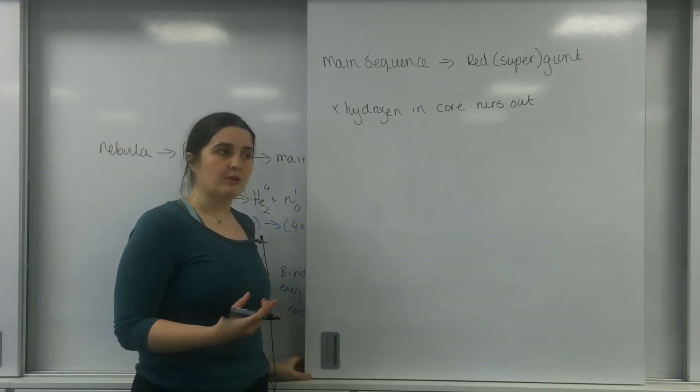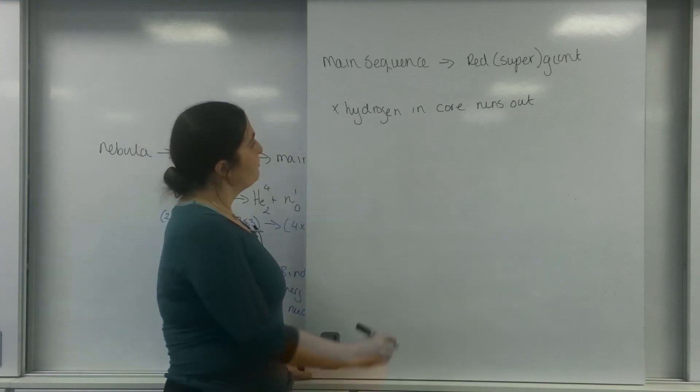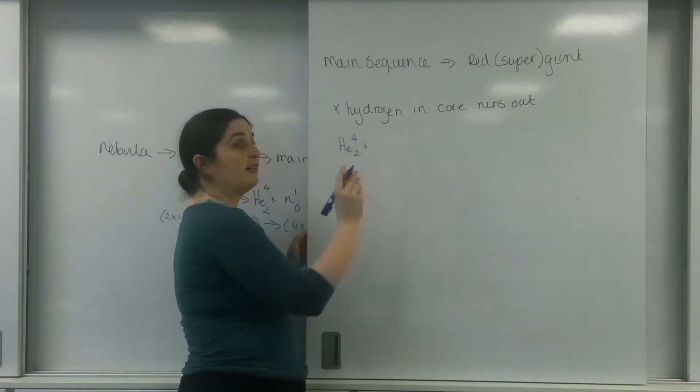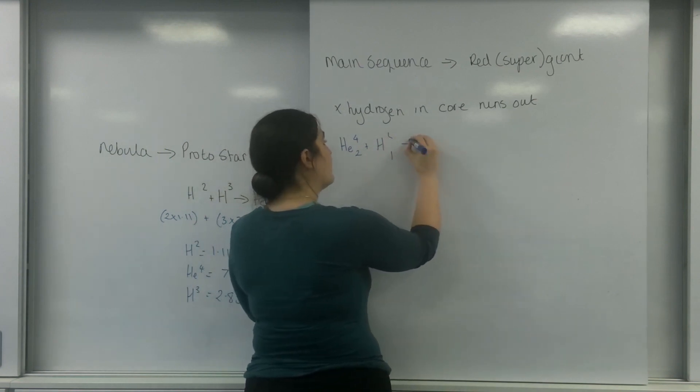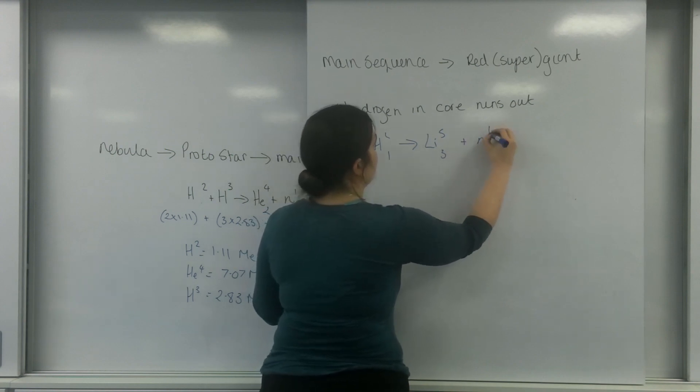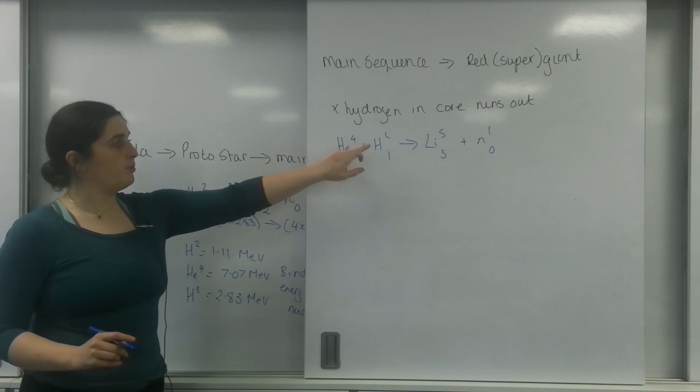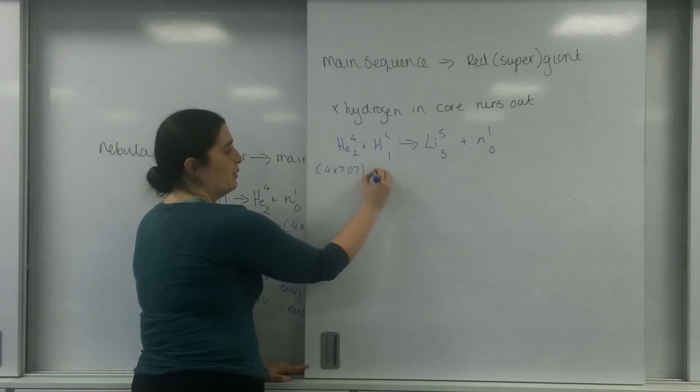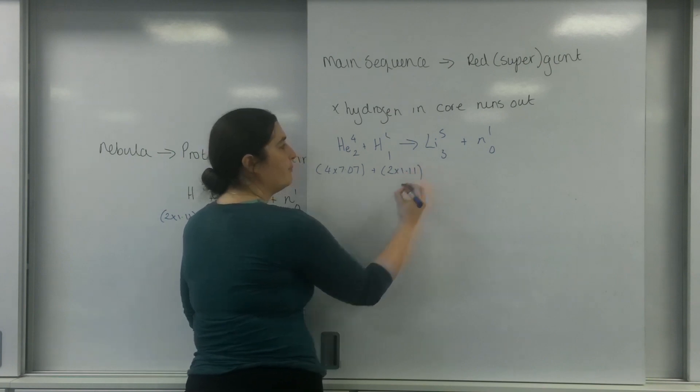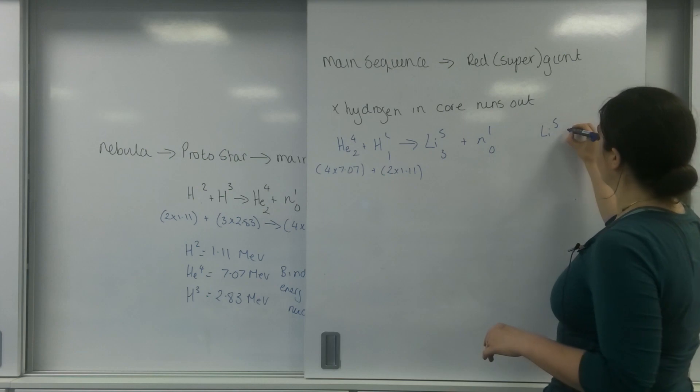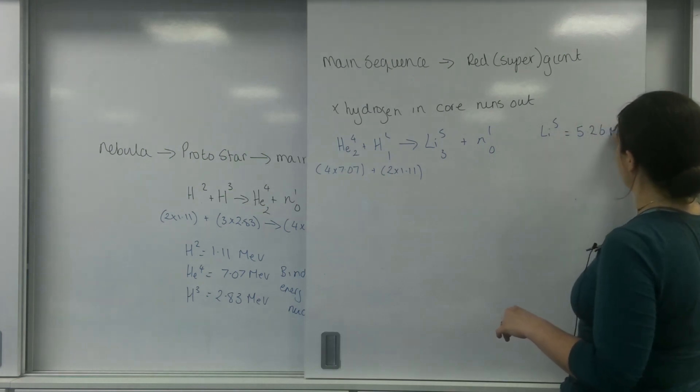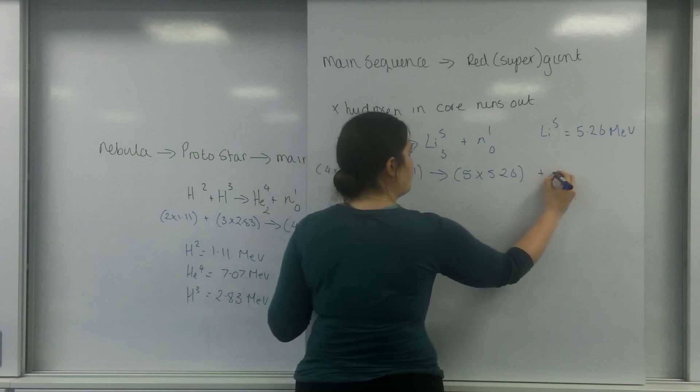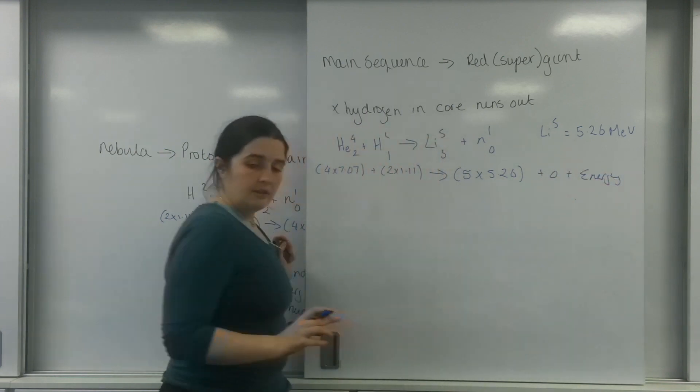Now there's only helium left to burn. Let's do a bit of math. I'm going to have helium-4-2 plus a little bit of hydrogen going to lithium-5-3 plus a neutron. So I've got 4 times 7.07 plus 2 times 1.11. Lithium-5 has a binding energy per nucleon of 5.26 MeV, so that goes to 5 times 5.26 plus zero plus energy.